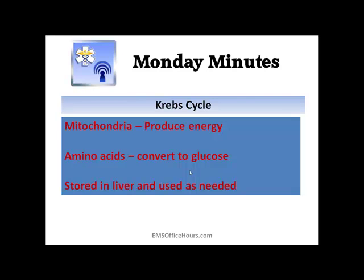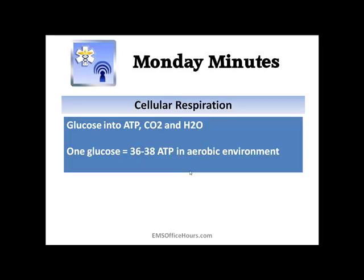Finally, let's talk about cellular respiration. The mitochondria metabolizes glucose into ATP, CO2, and H2O. Keep in mind that in an aerobic environment with oxygen, one glucose becomes 36 to 38 ATP. So keep in mind: glucose into ATP, CO2, and H2O.